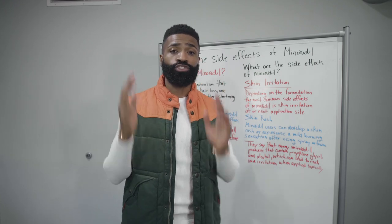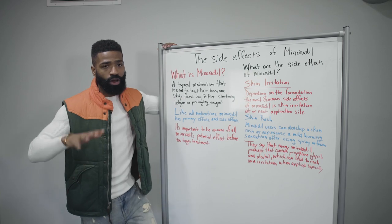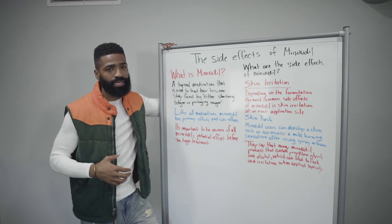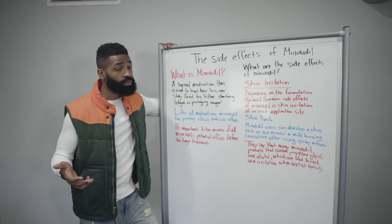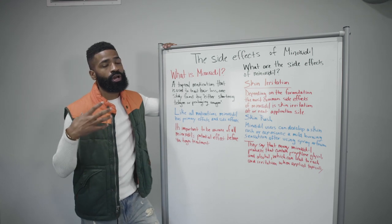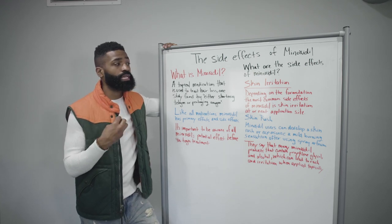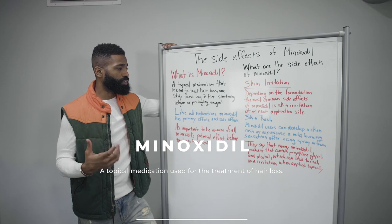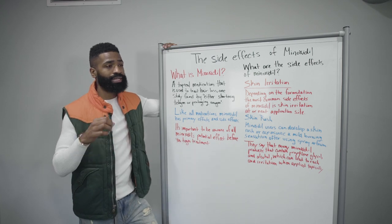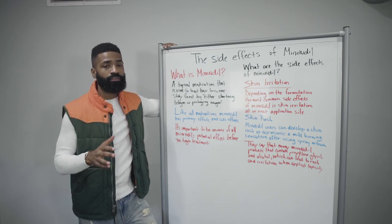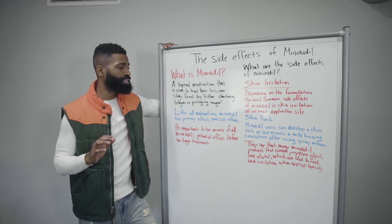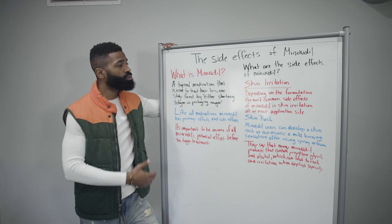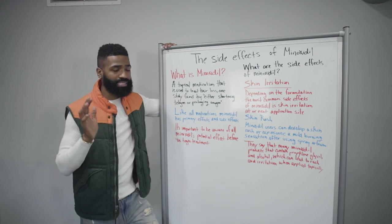People always ask me: what are the side effects of minoxidil, can I use it on my face, can I use it on my scalp? Yes, you can — people have used it on their scalp and on their face and seen results. Let me break down exactly what minoxidil is first. Minoxidil is a topical medication used for hair loss. A study found that it either shortens the telogen phase or extends the anagen phase. The telogen phase is the shedding phase where your hair is not growing; the anagen phase is where your hair is growing. So minoxidil prolongs the anagen phase. Like all medications, it has primary effects and side effects.